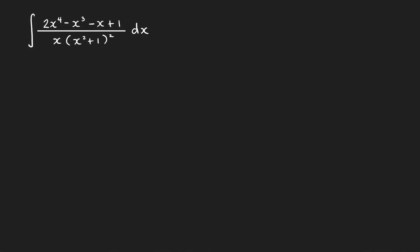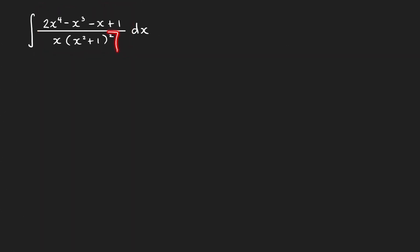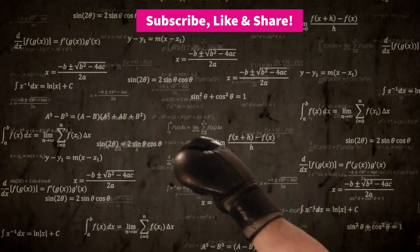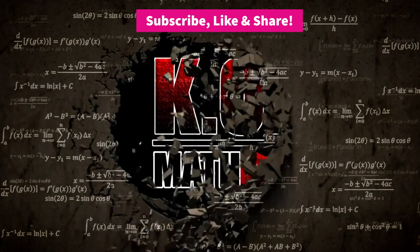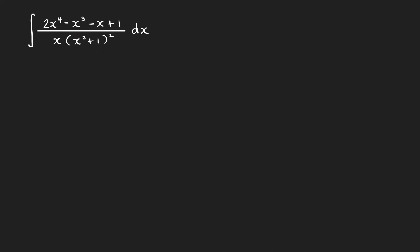Hello everyone. In this video, we're going to evaluate the integral of this rational function here with a repeated irreducible quadratic factor in the denominator. We know already that we can write the partial fraction decomposition of this one because the numerator has degree 4 and the denominator has degree 5, so this is a proper rational function. Make sure that your rational function is a proper rational function before you do partial fraction decomposition.